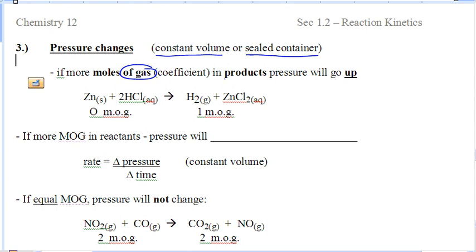You have to look to see if more gases are being made. If the number of gases in the products are higher, if more gases are being made, then the pressure will increase. Here we have zero moles of gas, and you're forming one mole of gas. The pressure will go up. Increase in pressure.